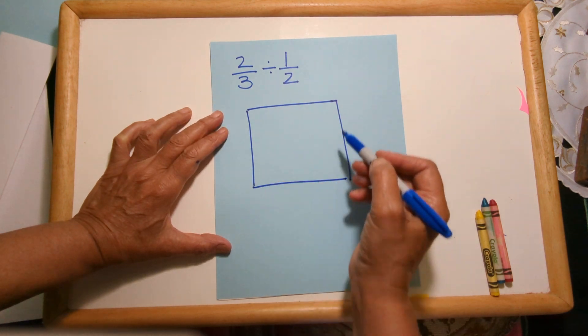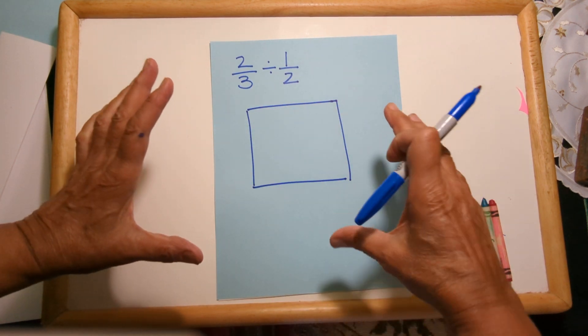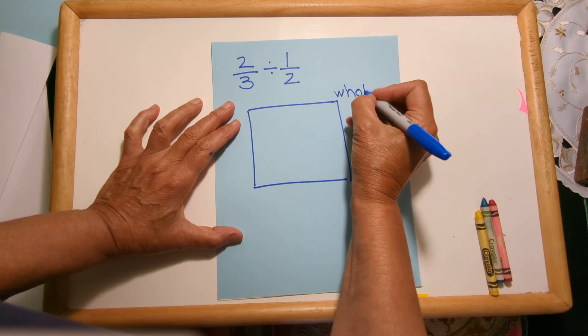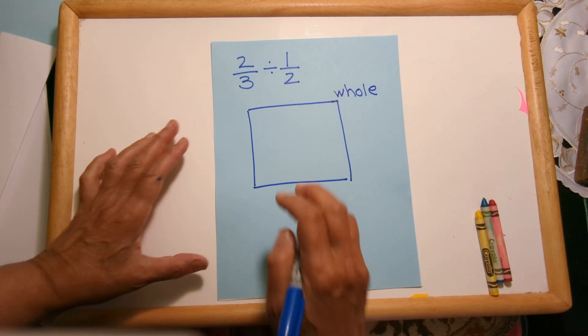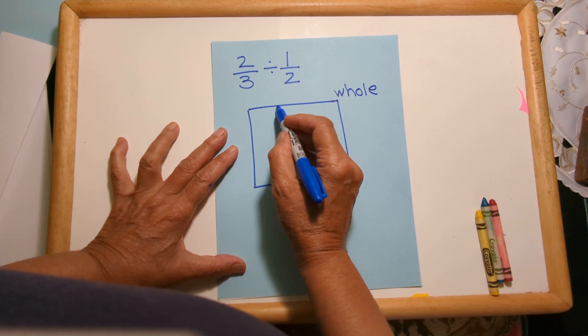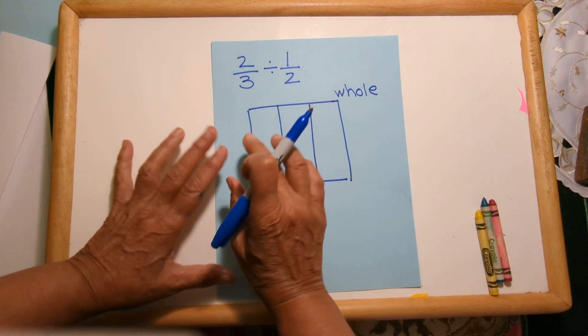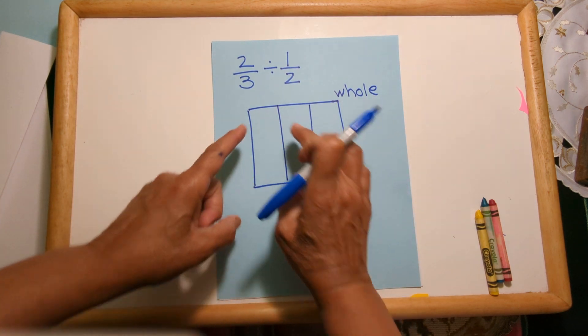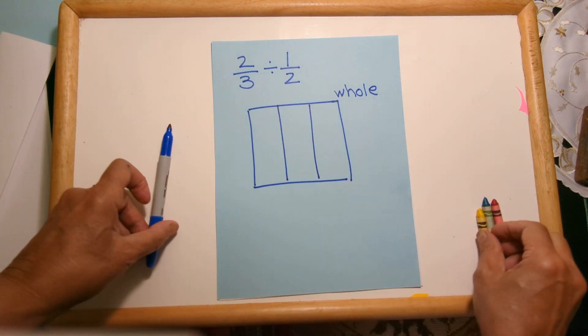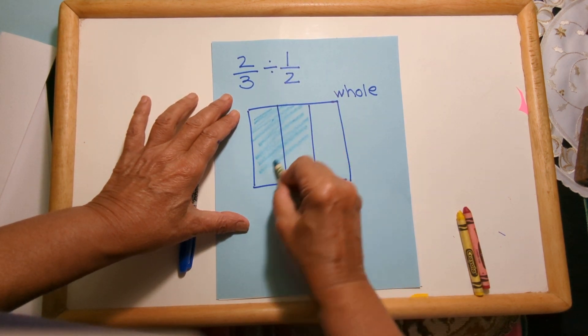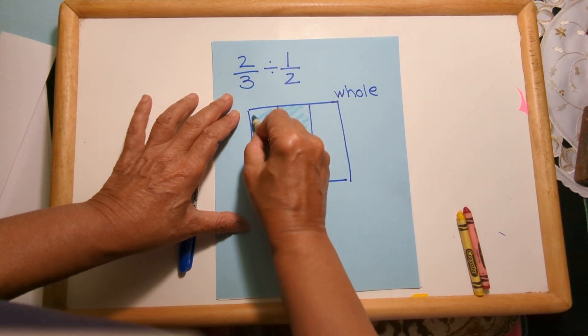So here's my square which I like to think of as the whole thing, and I'll divide that into thirds and then find what two-thirds is. So that's three parts and this is two-thirds. There's my two-thirds.